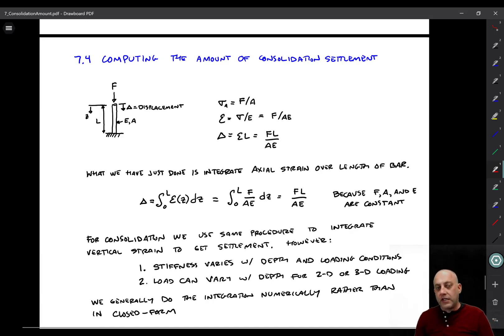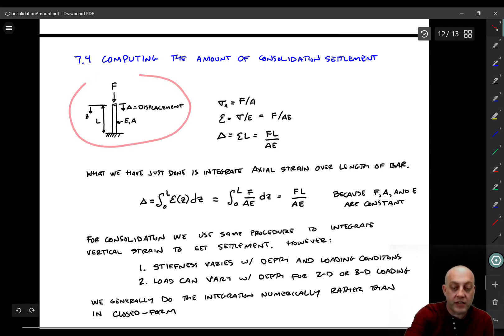Let's look at taking the results of a consolidation laboratory test and using it to compute the amount of consolidation and settlement that will happen in the field under some one-dimensional loading condition. We'll motivate this using a steel bar. I think it's really easy to understand the steel bar and then extrapolate. So here's a picture that shows that steel bar.